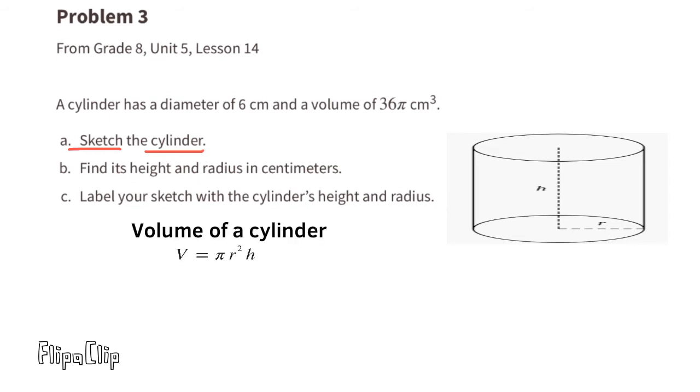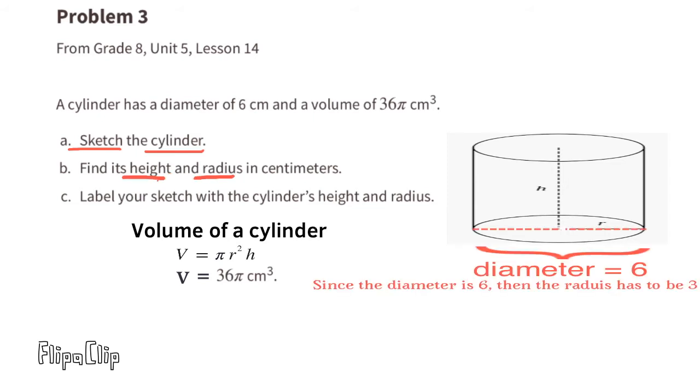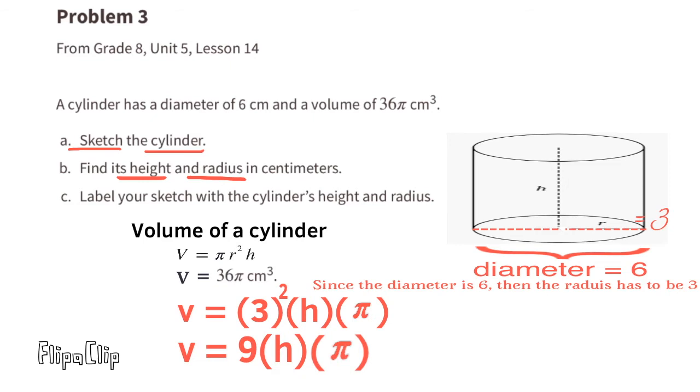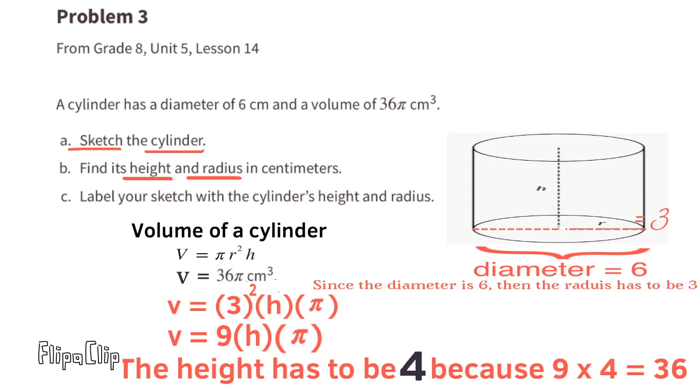The volume of a cylinder is pi times r squared times the height. They've already told us that the volume is 36 pi centimeters cubed. They also told us that the diameter is 6 centimeters. Since the diameter is 6, then the radius has to be 3. Now we can substitute the 3 for the r. V equals 3 squared times the height times pi. 3 squared is 9. The volume equals 9 times the height times pi. 9 times h equals 36. So the height has to be 4 because 9 times 4 equals 36. Now we can label the height. The height is 4 and the radius is 3.